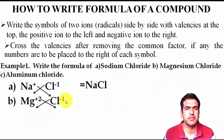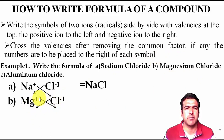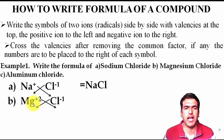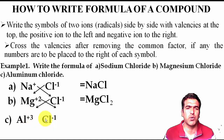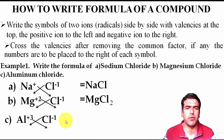For magnesium chloride: Mg²⁺ and Cl⁻. Magnesium's charge (2) goes below chlorine, and chlorine's charge (1) goes below magnesium. Formula: MgCl₂. For aluminum chloride: Al³⁺ and Cl⁻. Aluminum's charge (3) goes below chlorine, and chlorine's charge (1) goes below aluminum. Formula: AlCl₃.